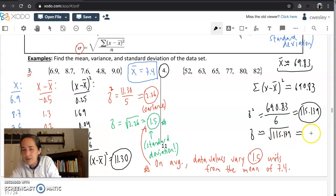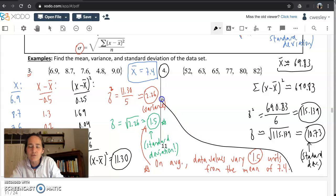Just like we analyzed the last answer. This is standard deviation. And on average, the data values in this list for number four vary about 10 units from the mean, which you can tell by the numbers as well.